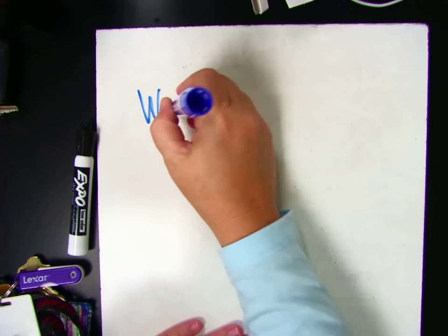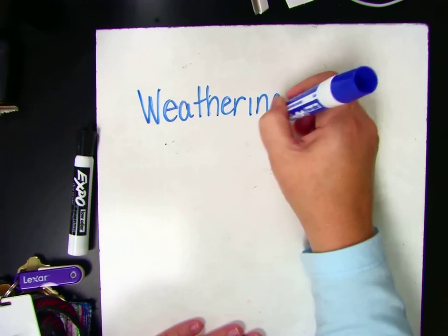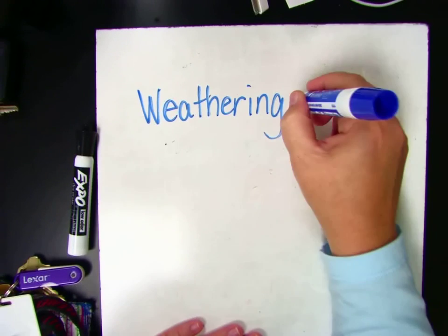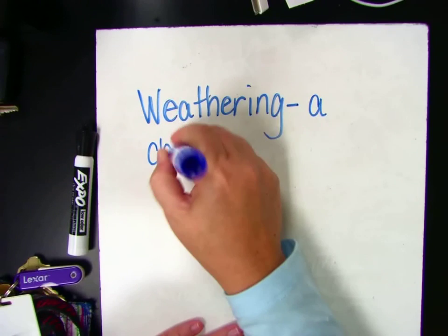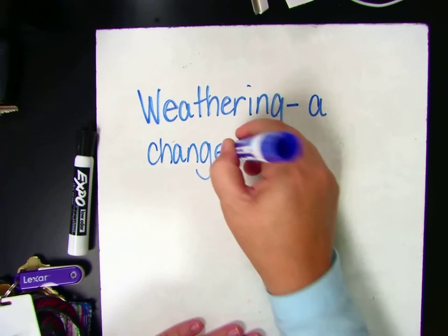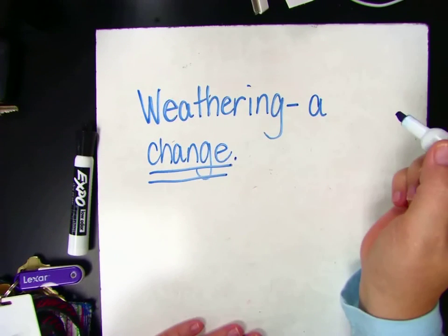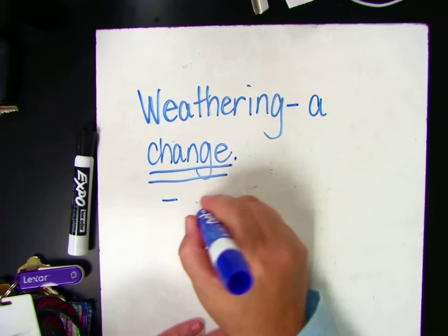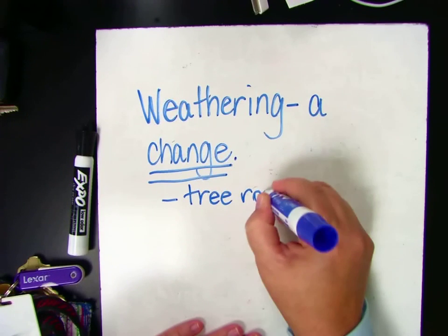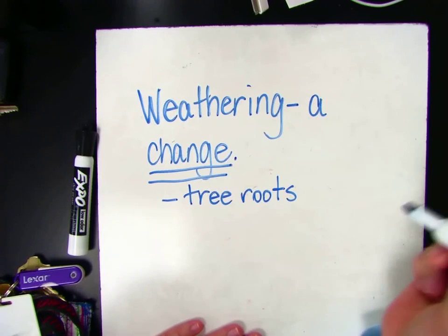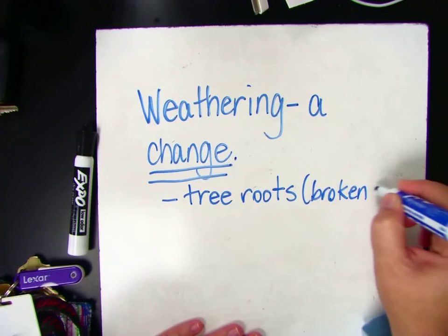The first one is weathering, and weathering is a change in the rock, or a change in the surface of the earth. A change can be caused by — as you saw in the book — tree roots that grow through the rock and break it, so rocks get broken.